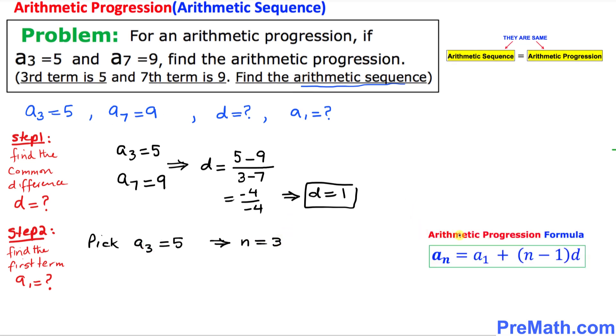Let me write it down: aₙ = a₁ + (n - 1)d. In our case, aₙ is a₃, so I can write a₃ = a₁ + (3 - 1) times d.